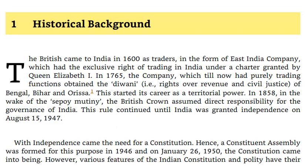The British came to India in 1600 as traders in the form of the East India Company, which had the exclusive right of trading in India under a charter granted by Queen Elizabeth I. In 1765, the Company, which till then had purely trading functions, obtained the Diwani — rights over revenue and civil justice — of Bengal, Bihar and Orissa. This started its career as a territorial power. In 1858, in the wake of the Sepoy Mutiny, the British Crown assumed direct responsibility for the governance of India. This rule continued until India was granted independence on August 15, 1947.